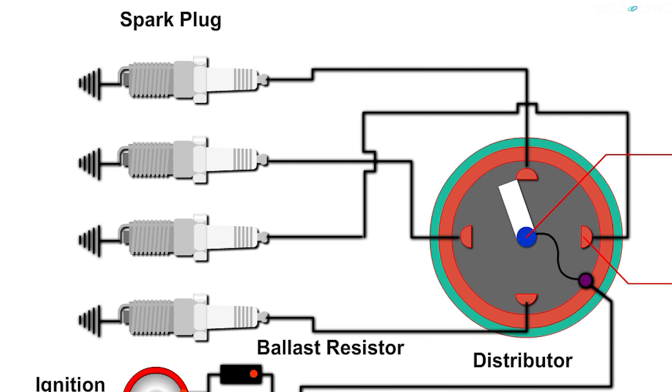As the rotor rotates, it comes in contact with the metal electrodes. Thus, spark is produced in the respective spark plugs accordingly. This is how the battery coil ignition system works.